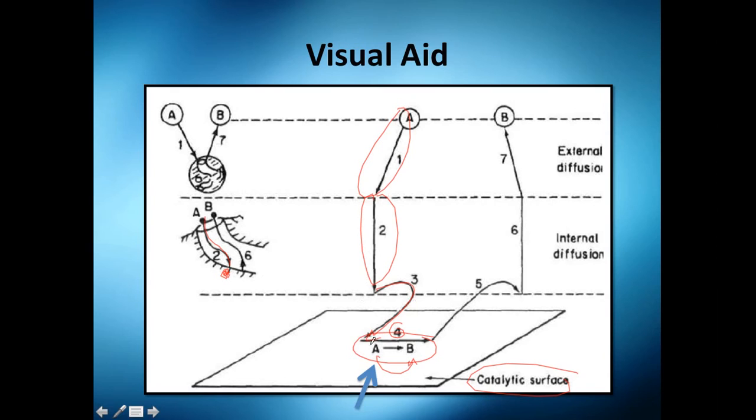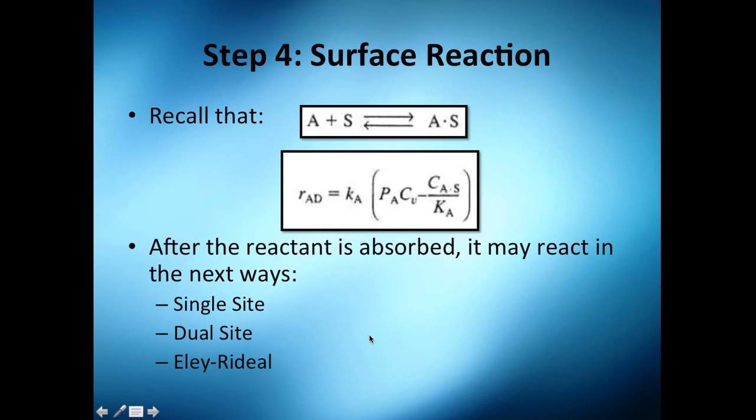We're going to absorb the reactant and now we're ready to transform our reactant into B. Recall that my reactant A plus my active site S is in equilibrium with the absorption of that reactant in that site. After it's absorbed, we may react it in the next ways. We have three different models.